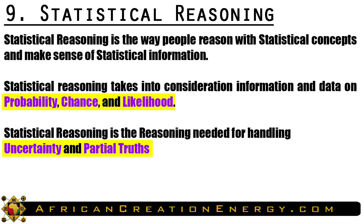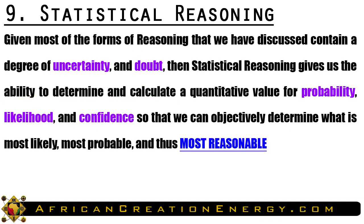The ninth and final form of reasoning is called statistical reasoning — the way people reason with statistical concepts and make sense of statistical information. Statistical reasoning takes into consideration information and data on probability, chance, and likelihood. It is the reasoning needed for handling uncertainty and partial truths. Given that most forms of reasoning contain a degree of uncertainty and doubt, statistical reasoning gives us the ability to determine and calculate a quantitative value for probability, likelihood, and confidence so that we can objectively determine what is most likely, most probable, and thus most reasonable.